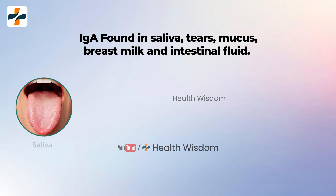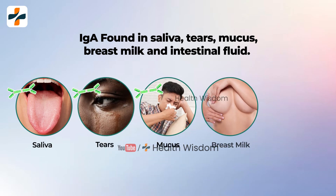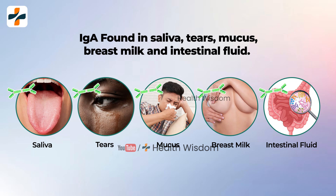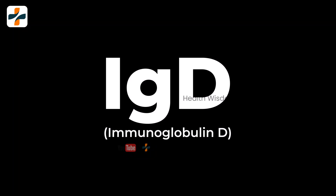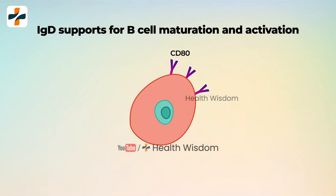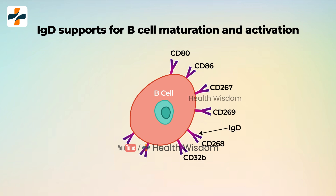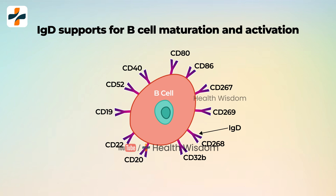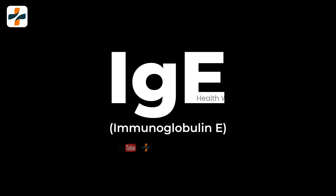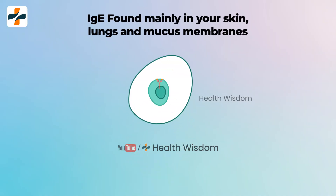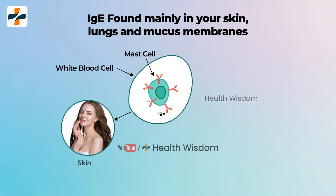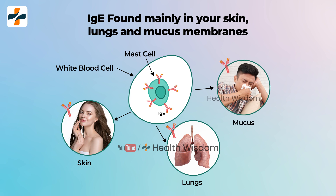IgA is found in saliva, tears, mucus, breast milk, and intestinal fluid, and protects against ingested and inhaled pathogens. IgD is found on the surface of your B cells; though its exact function is unclear, experts think that IgD supports B cell maturation and activation. IgE is found mainly in your skin, lungs, and mucous membranes. IgE antibodies cause mast cells, a type of white blood cell, to release histamine and other chemicals into your bloodstream, and can cause allergic reactions.